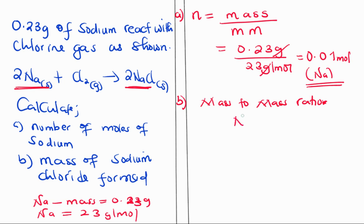Mass to mass ratio of sodium to sodium chloride. Sodium here is 23, the mass number. There's a two in front, so we multiply that 2 by 23 which gives us 46.